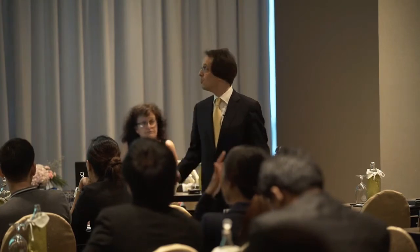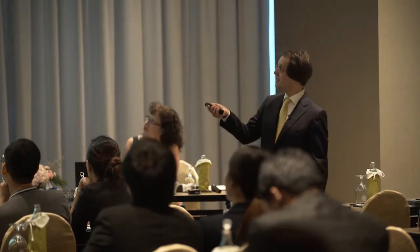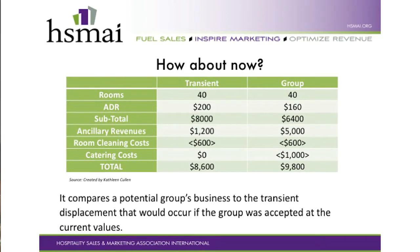Because the transient guest might also spend some ancillary revenue depending on the segment. The wholesale segment potentially spends less ancillary; the OTA segment might go to F&B and spa. But the group is more in this case because they have a function — more F&B, meeting rooms, and so on. Ancillary for the group is worth $5,000.